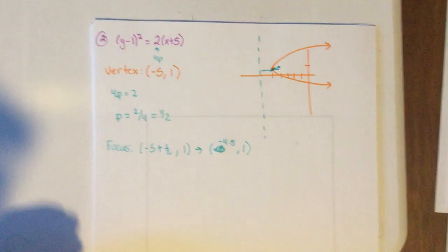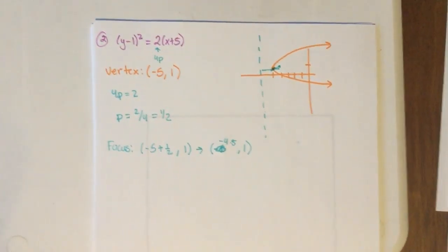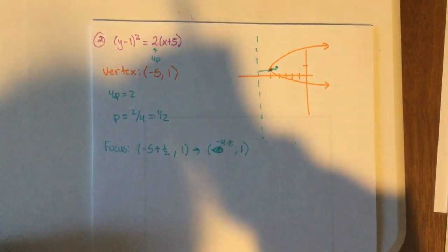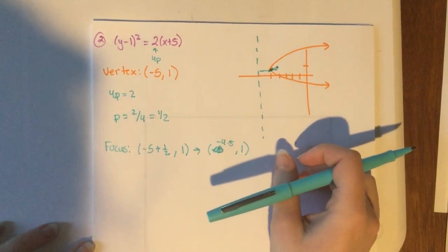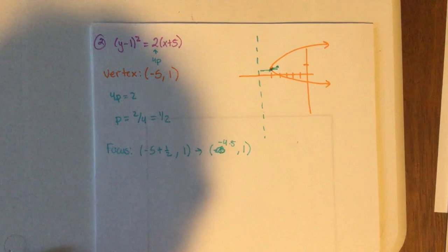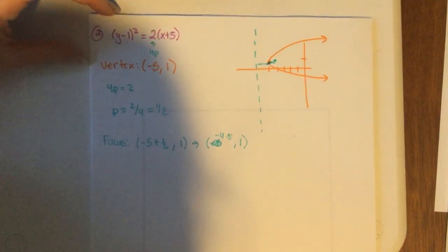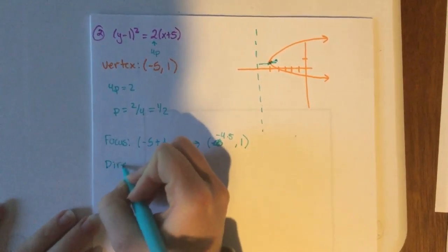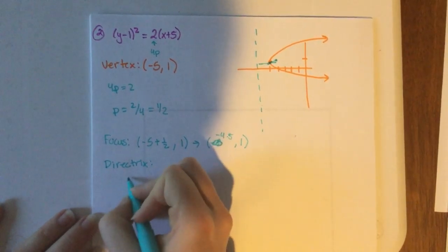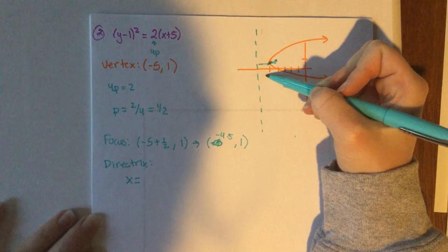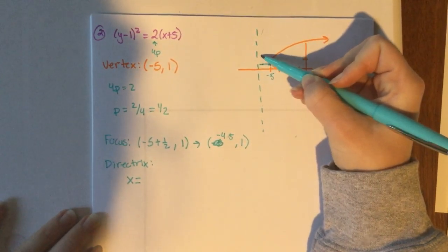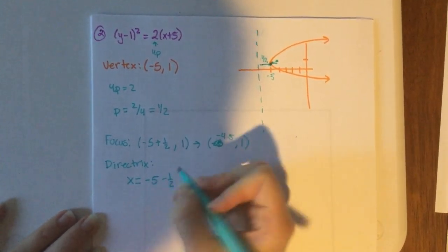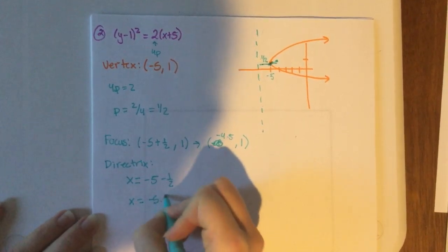You can write -4.5 as a decimal, mixed number, or improper fraction — any form is acceptable. For the directrix, it's now a vertical line, so it's x equals something. Starting at x = -5 and moving left one-half means subtracting: negative five minus one-half gives x equals -5.5.